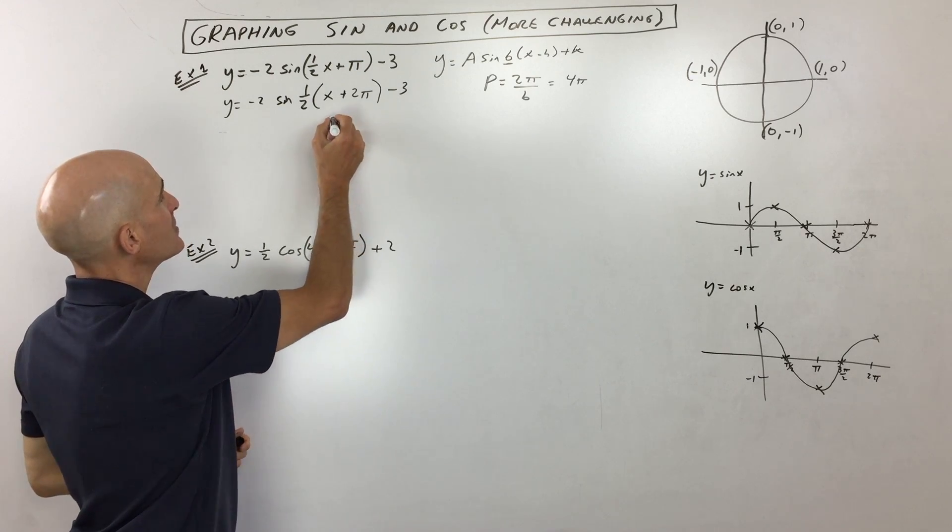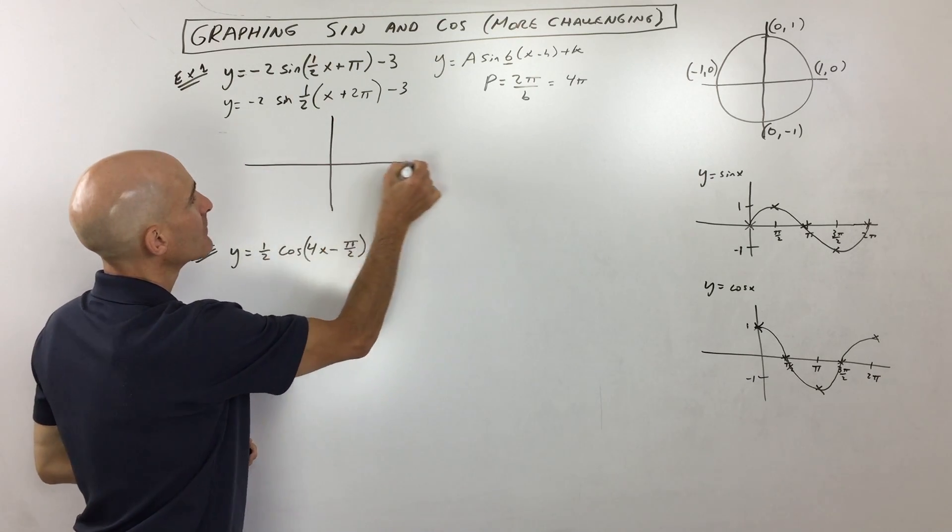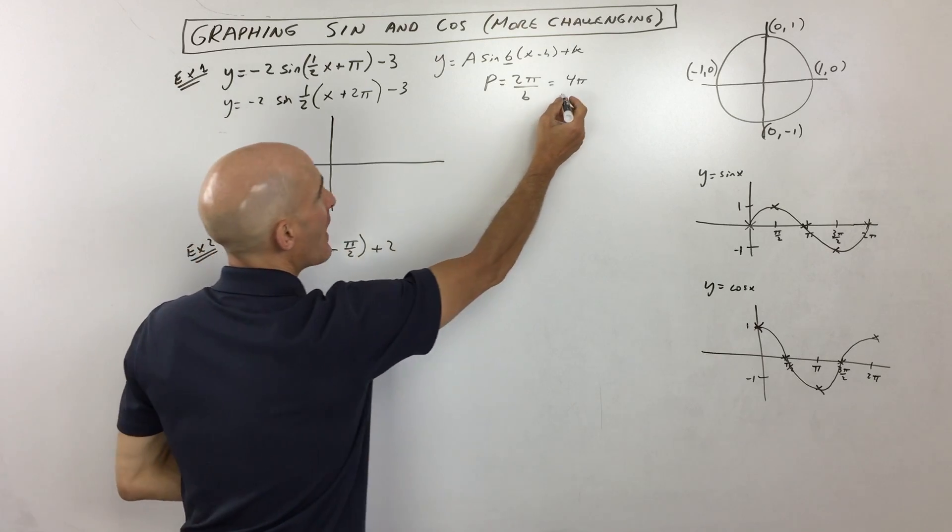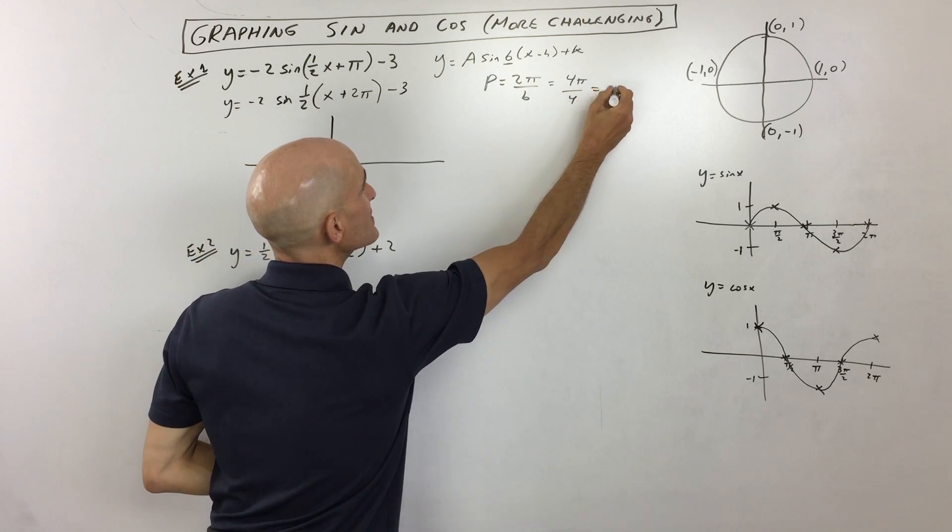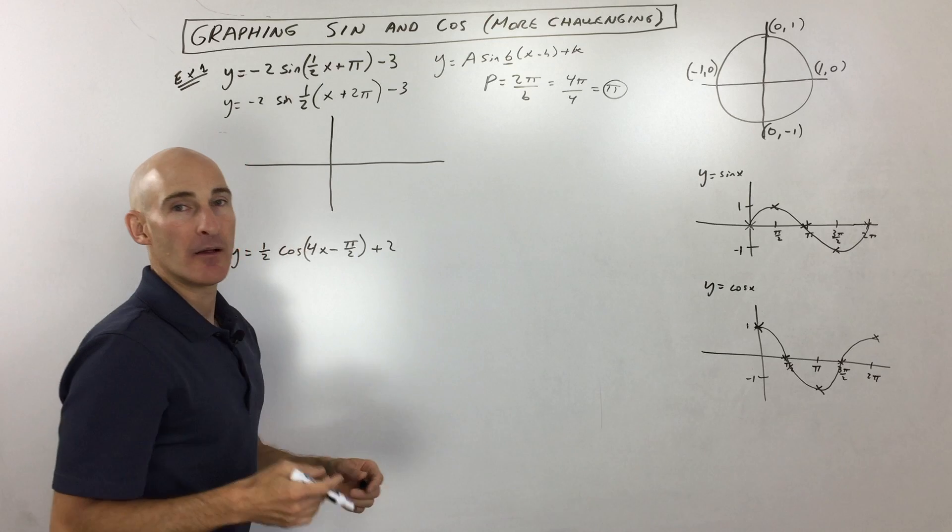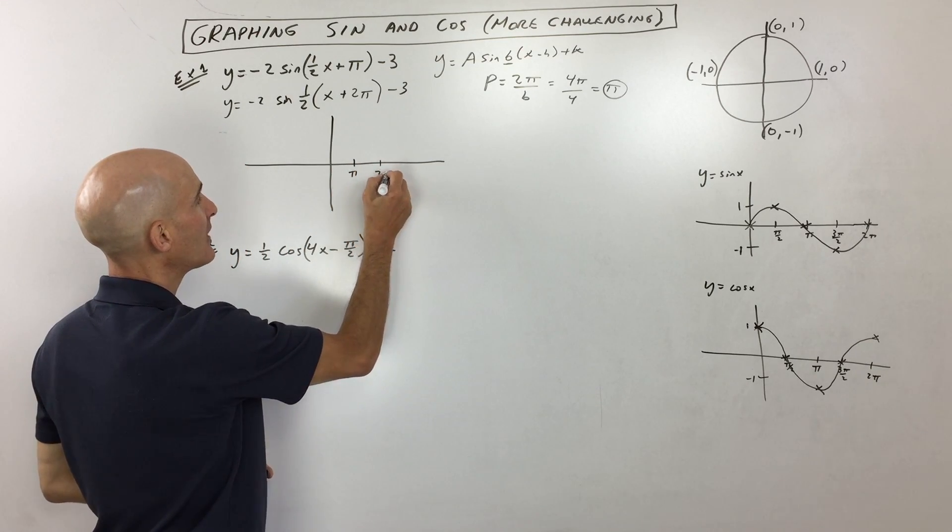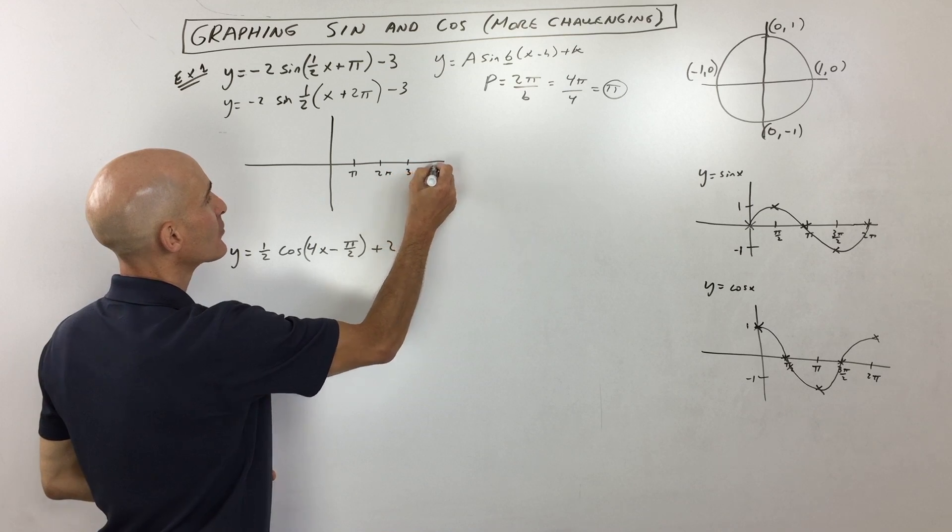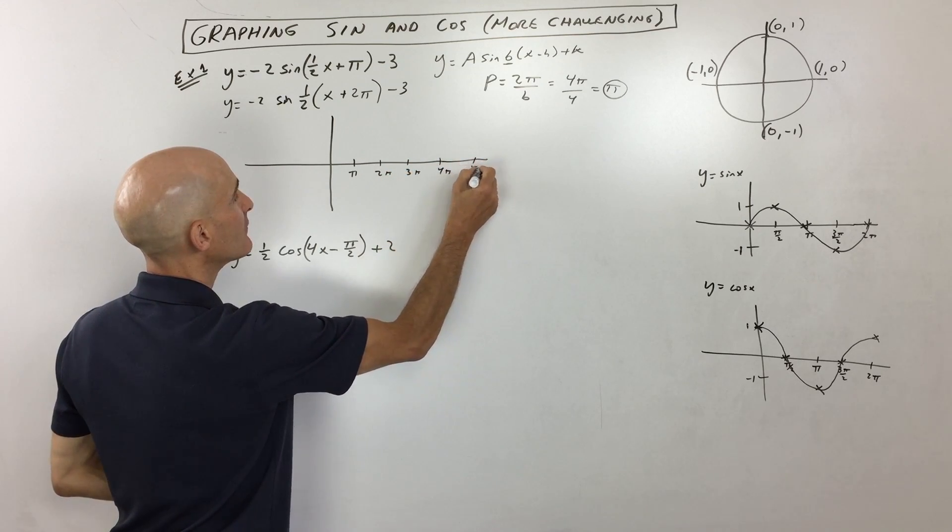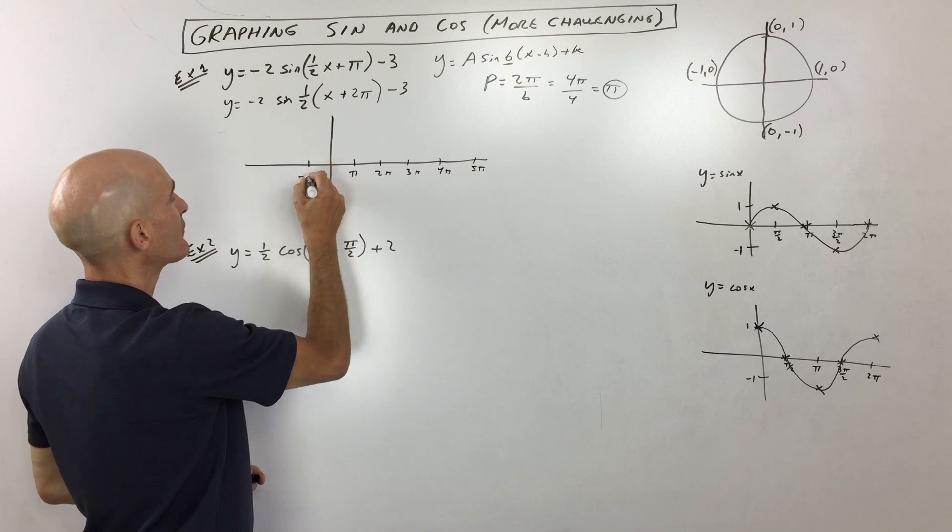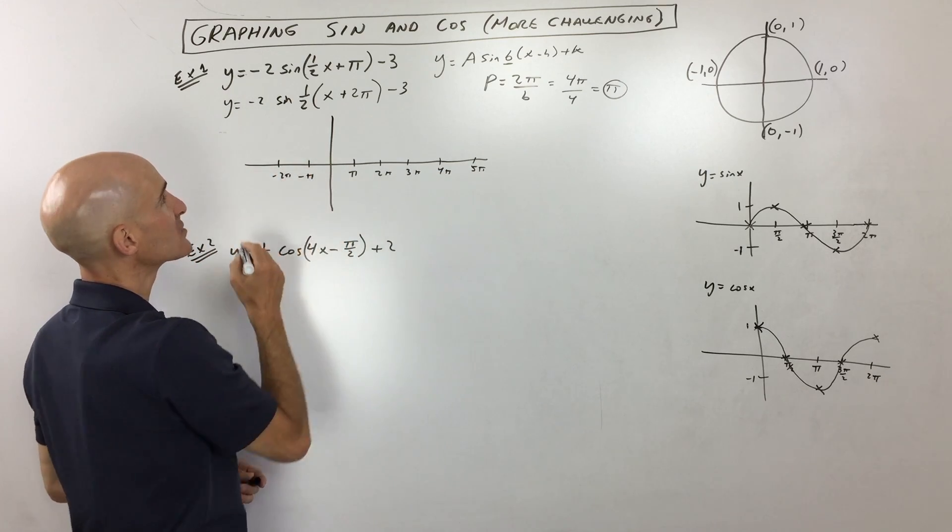Now what I like to do from here is draw my graph. But now that I know my period is four pi, I like to divide this into four pieces and make my scale pi. So in this case, I'm just going to count by pi. So this is one pi, two pi, three pi, four pi, five pi, and so on. You can go here to the left, negative pi, negative two pi, and so on.